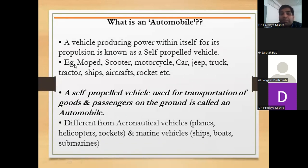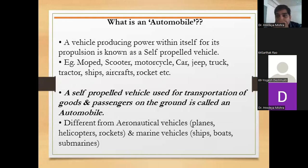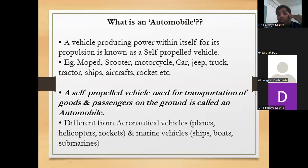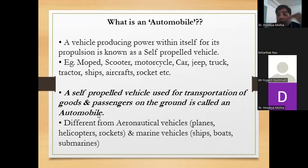Examples of self-propelled vehicles include moped, scooter, motorcycle, car, jeep, truck, tractor, ship, aircraft, and rocket — all types of vehicles: two-wheeler, three-wheeler, four-wheeler, and multi-wheeler. All these belong to this category. A self-propelled vehicle used for the transportation of goods and passengers on the ground is called an automobile. This is the specific definition of the automobile.